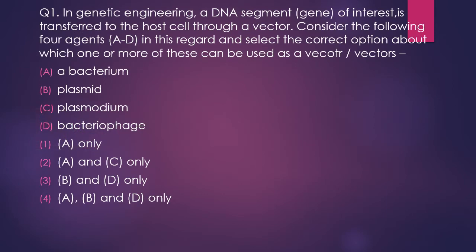Question 1. In genetic engineering, a DNA segment (gene of interest) is transferred to a host cell through a vector. Consider the following 4 agents and select the correct option about which of these can be used as a vector: Bacterium, Plasmid, Plasmid, Bacteriophage. The correct answer is option 3 — B and D: Plasmid and Bacteriophage can be used as a vector.